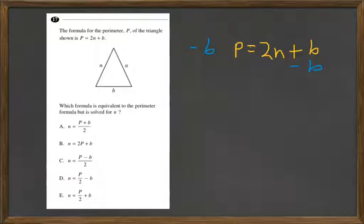We have a negative B. There's a positive P over here. And so then what does that leave us with? That gives us negative B plus P equals 2N.